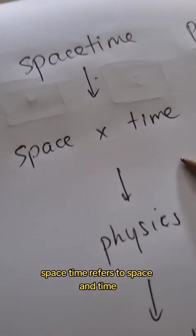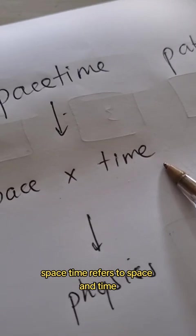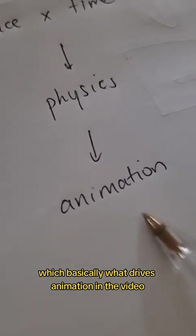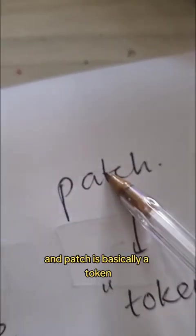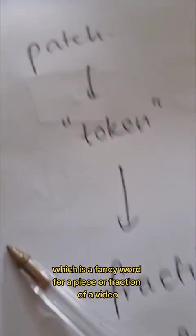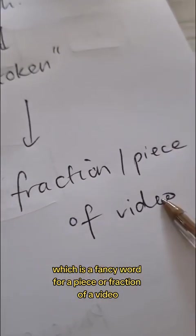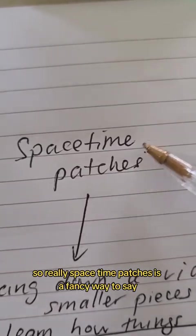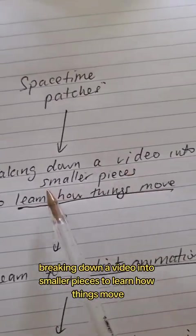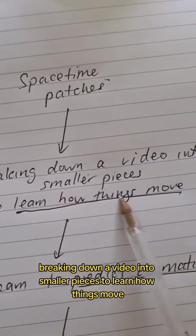But basically, space-time refers to space and time, which is basically physics, which is basically what drives animation in the video. And patch is basically a token, which is a fancy word for a fraction or a piece of a video. So really, space-time patches is a fancy way to say breaking down a video into smaller pieces to learn how things move.